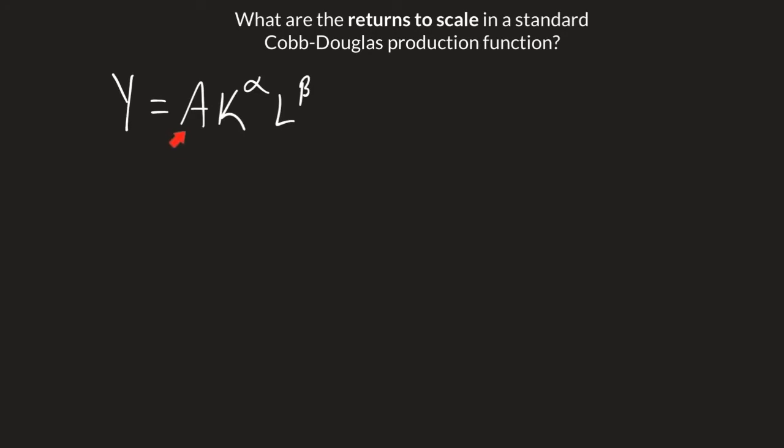Where A is our total factor productivity, K is our capital stock, L is our overall labor. We have our alpha and beta up here, which are exponents showing the portion of national income that goes towards capital and labor.